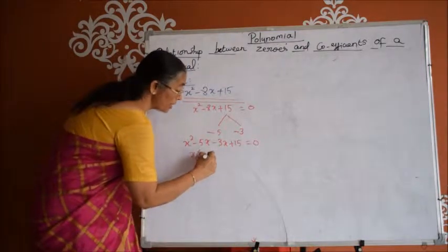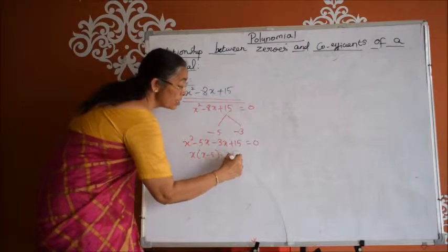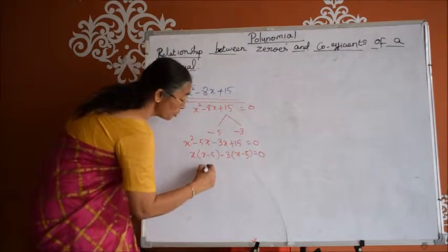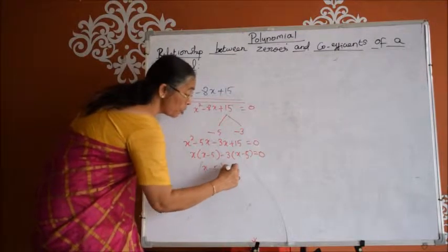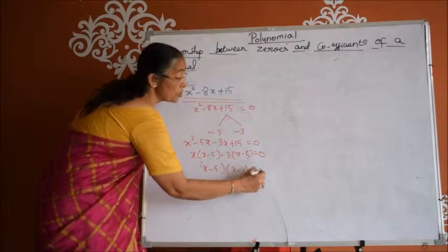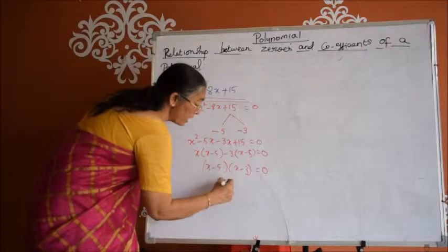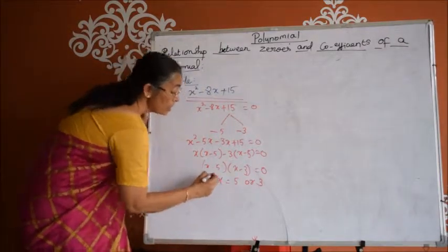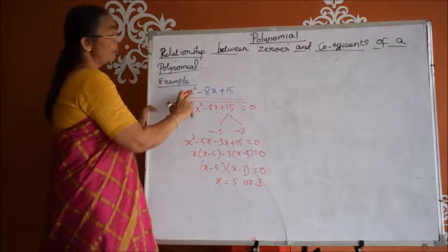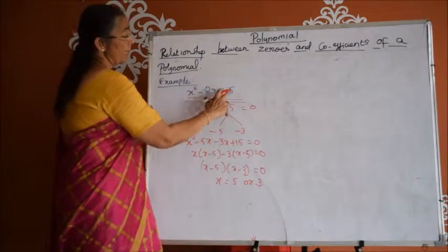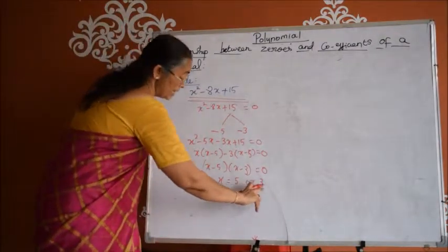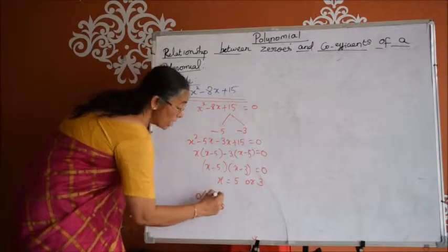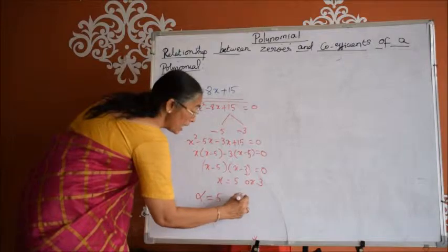x of (x minus 5) minus 3 of (x minus 5) is equal to 0, which is nothing but (x minus 5)(x minus 3) is equal to 0. So x values are 5 or 3. The two zeros for the polynomial x squared minus 8x plus 15 are 5 and 3, and let me denote alpha as 5 and beta as 3.